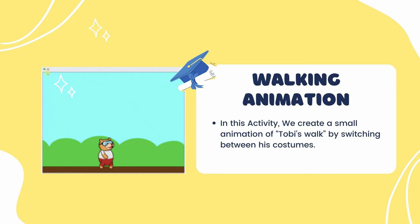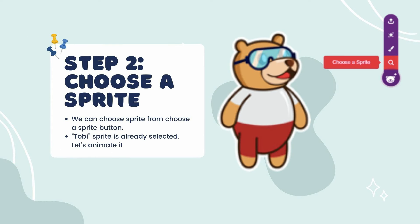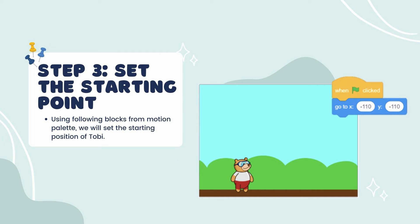In this activity, we created a small animation of Toby walking by switching between his costumes. For Step 1, choose a backdrop by clicking on the 'Choose a Backdrop' button, then choose a blue sky as a backdrop from the library. For Step 2, choose a sprite — the Toby sprite is already selected.